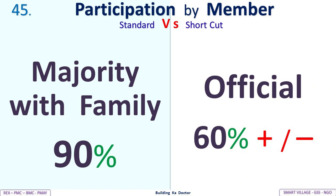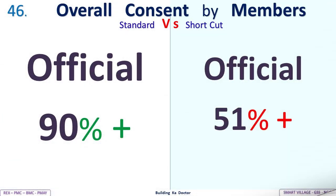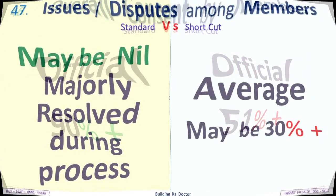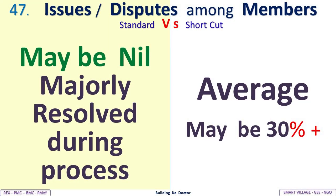Participation by members: Standard — majority with family, 90% plus; shortcut — official 60% plus or minus. Overall consent by members: Standard — official 90% plus; shortcut — official 51% plus. Issues and disputes among members: Standard — may be nil, majorly resolved during the process; shortcut — average may be 30% plus disputes remaining.